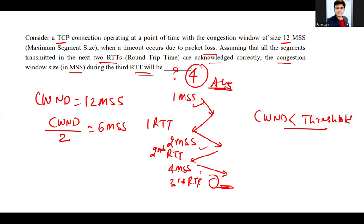size in MSS will be four, because every time it's doubled: one to two, two to four. Four is the correct answer for this GATE question. I hope the solution is clear. Please subscribe the channel for more solutions.